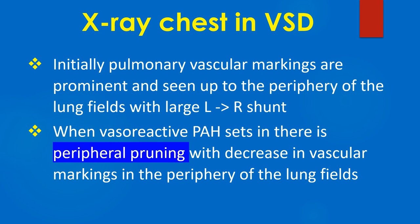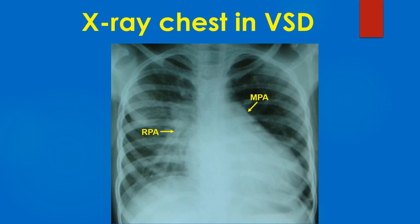Initially, pulmonary vascular markings are prominent and seen up to the periphery of the lung fields with large VSD. When vasoreactive pulmonary hypertension sets in, there is peripheral pruning with decrease in vascular markings in the periphery of the lungs. Chest X-ray PA view of a child with VSD, left-to-right shunt, and hyperdynamic pulmonary hypertension shows cardiomegaly, prominent main pulmonary artery segment and right pulmonary artery, and enlarged left pulmonary artery shadow below the left cardiac border within the cardiac silhouette. This child ideally needs cardiac catheterization for evaluation of shunt, pulmonary vascular resistance, and its reversibility to decide on surgical options.